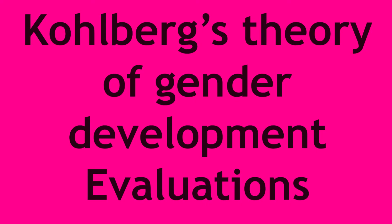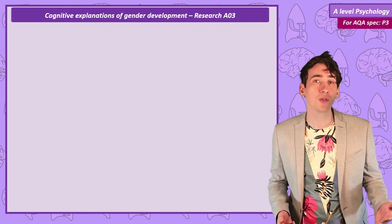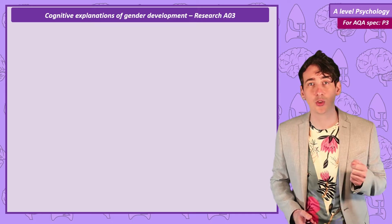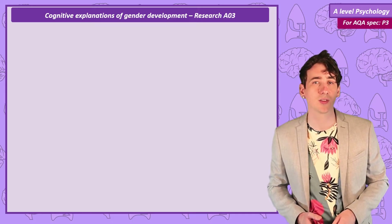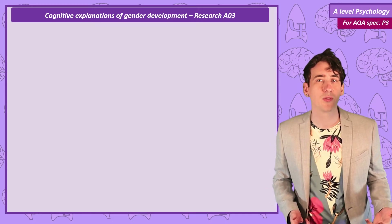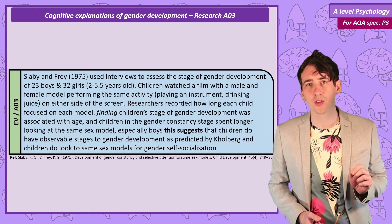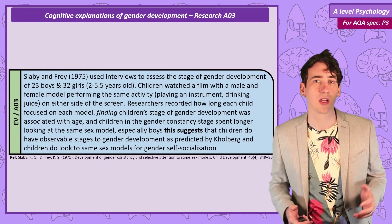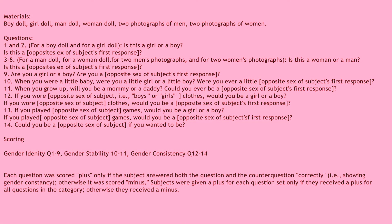To investigate if children after the consistency stage do selectively attend to members of their own sex, Salbi and Frey set up the following study. They first conducted interviews with the children to assess their stage of gender development, using actual interview questions and materials.